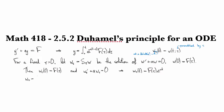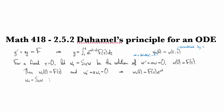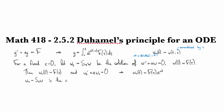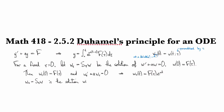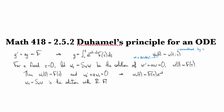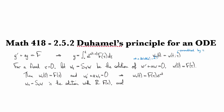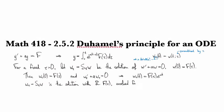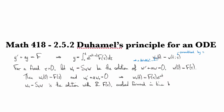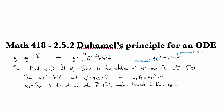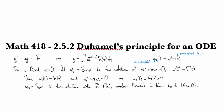So then this shifted version here is the solution with initial condition F of tau. I'm just writing down what I said before. It evolved forward in time by time T. And that's forward in time from T equals zero.